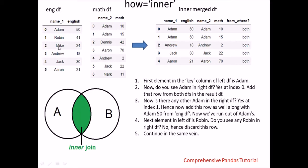Next, we see Mike. I do not see Mike here either, so we discard this as well. Next, we see Andrew. Do we see Andrew here? Yes. So we say Andrew 18 and Andrew 2. Next, Jack 30 and Jack 22, so Jack 30, Jack 22. Next, Aaron is 21 here and we see Aaron is 70 there. So we say Aaron 21, Aaron 70. This is the end of the inner merged data frame — it will only have these five elements. This is how inner merge works.